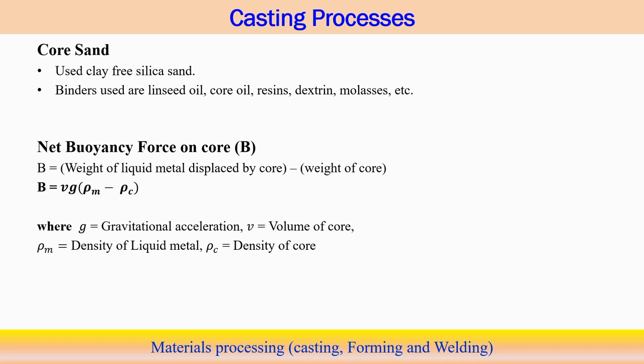The core can be made of sand — usually clay-free silica sand — with different types of binders such as core oil, resin, or dextrin added to create a solid, typically cylindrical structure placed inside the mold cavity. This core is subjected to a buoyancy force when the mold cavity is filled with liquid metal.